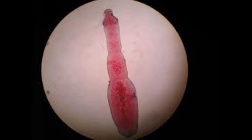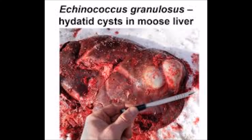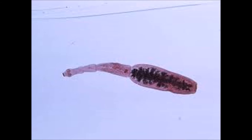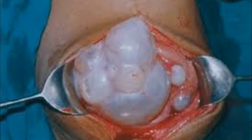Echinococcosis is contracted by coming into contact with or accidentally swallowing its eggs. Dogs that eat home-slaughtered livestock become infected with the tapeworm. If anyone comes into contact with the infected dog, particularly intimate contact between children and their pet dogs, this could lead to human infections. The ingestion of vegetables and soil contaminated with infected dog feces may also lead to human infections.